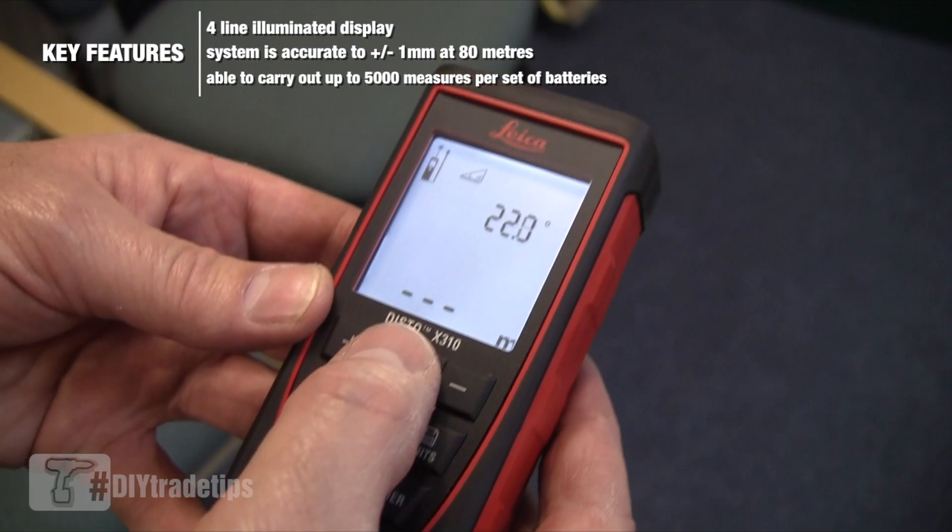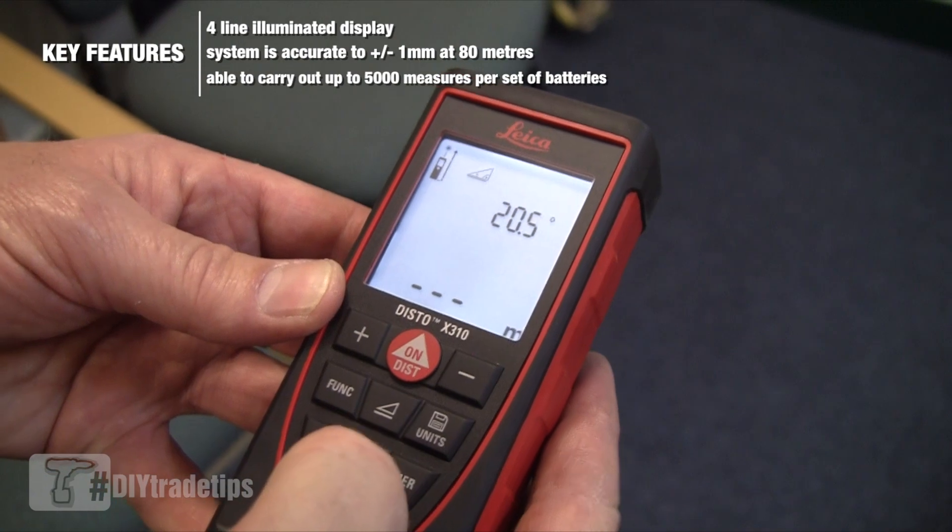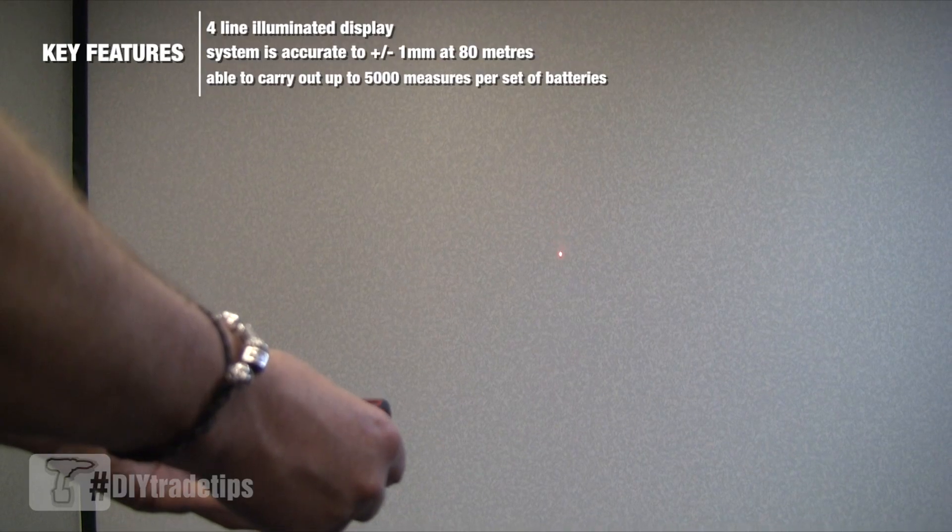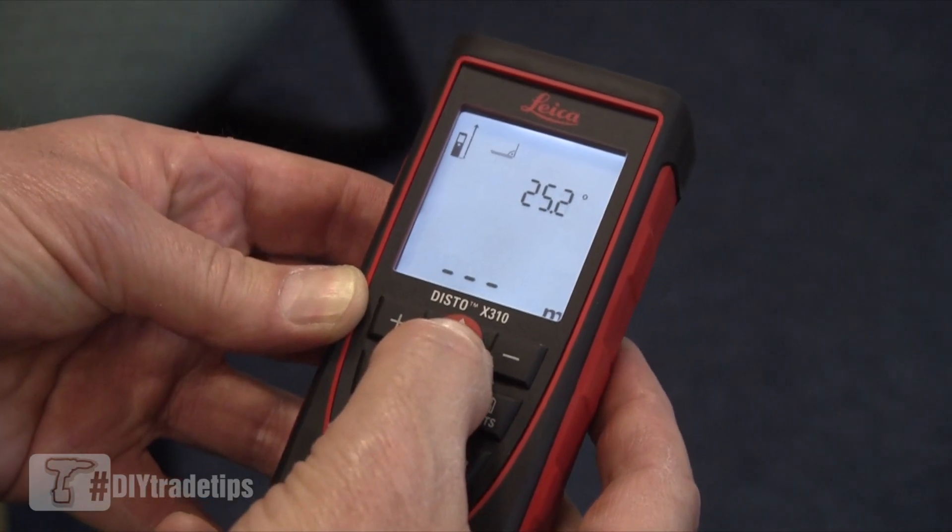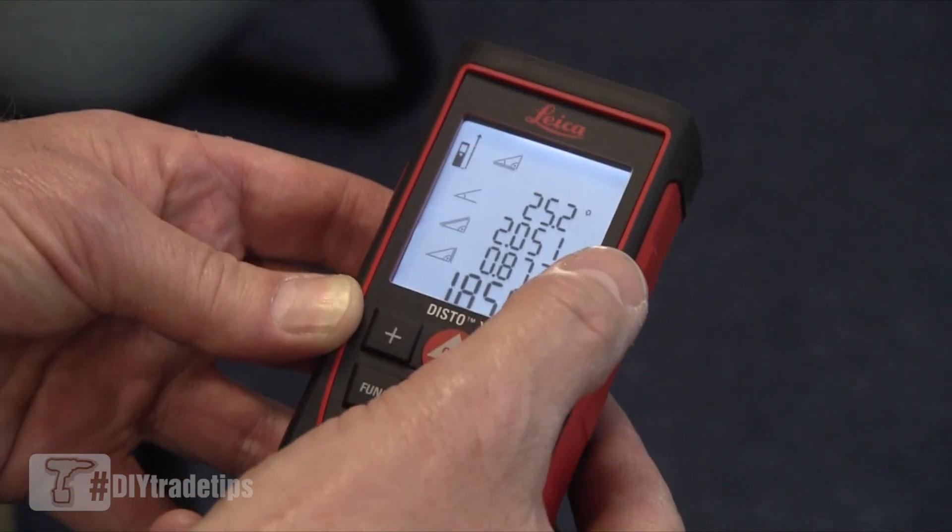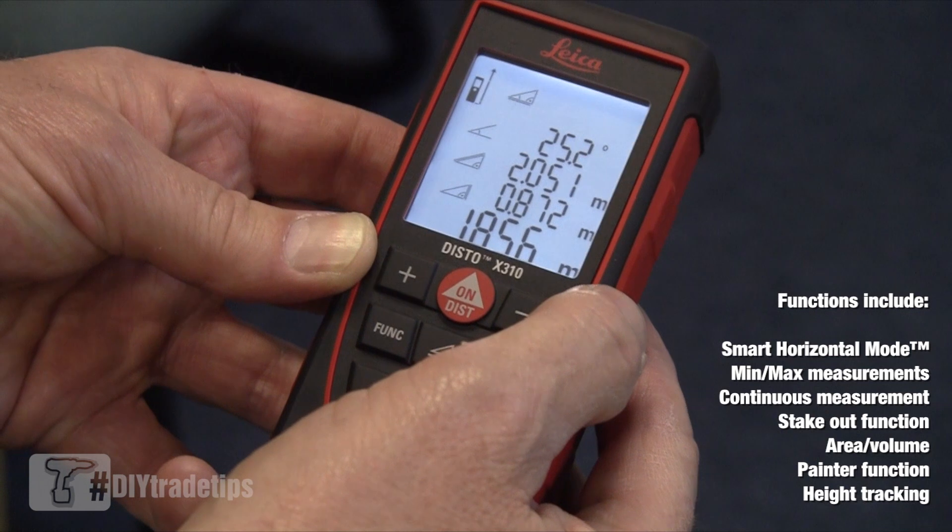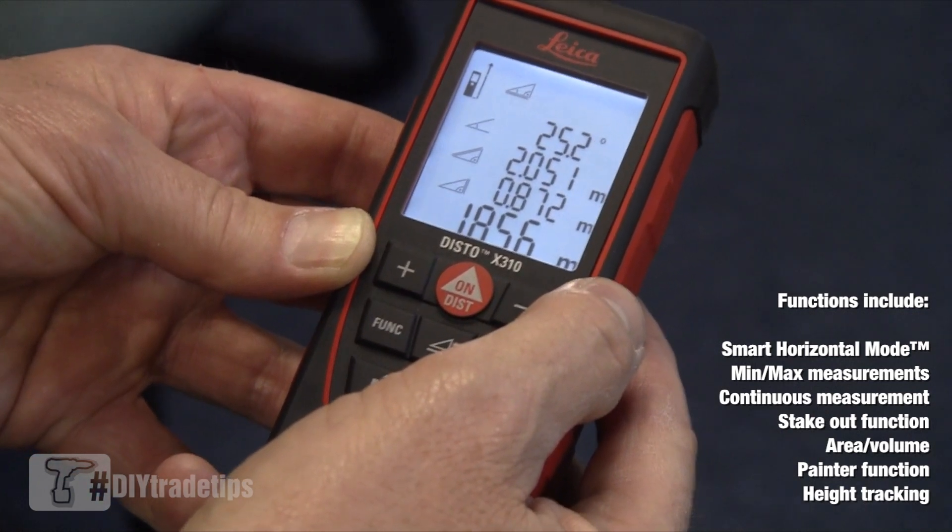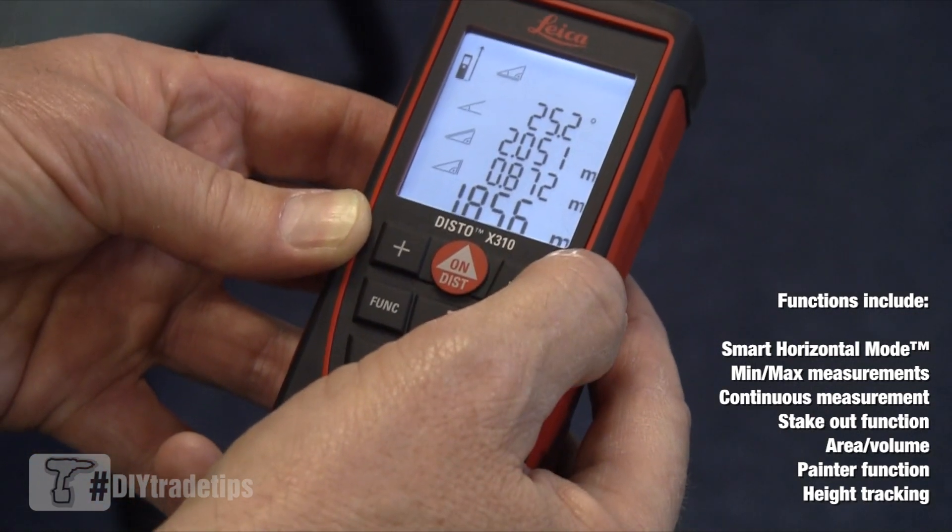By pressing measure, we have on top the vertical angle, the slope distance to the subject, the difference in height, and at the bottom the calculated true horizontal or plan distance.